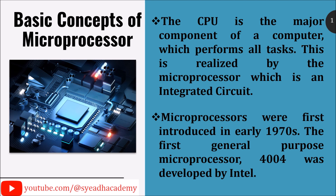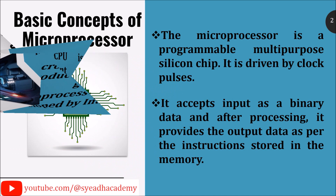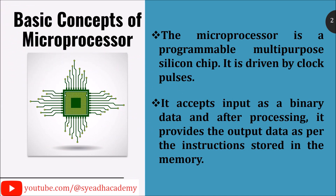Microprocessors were first introduced in the early 1970s. The first general-purpose microprocessor, the 4004, was developed by Intel. The microprocessor is a programmable multipurpose silicon chip driven by clock pulses. It accepts input as binary data and, after processing, provides output data as per the instructions stored in memory.